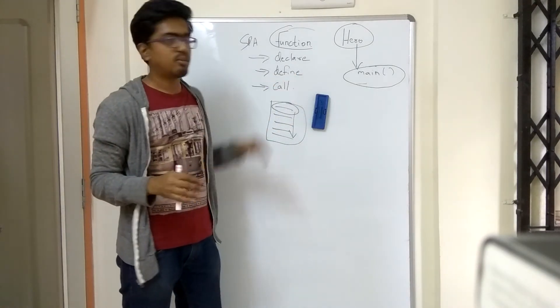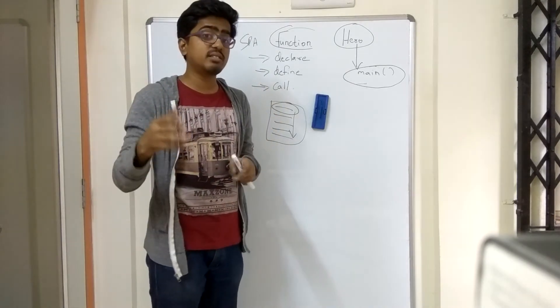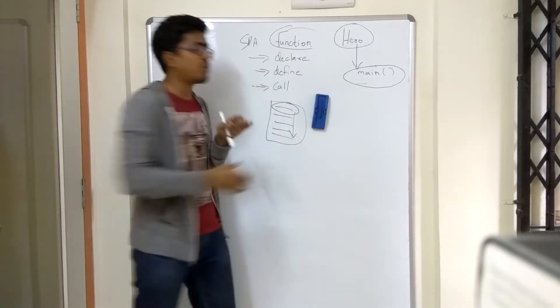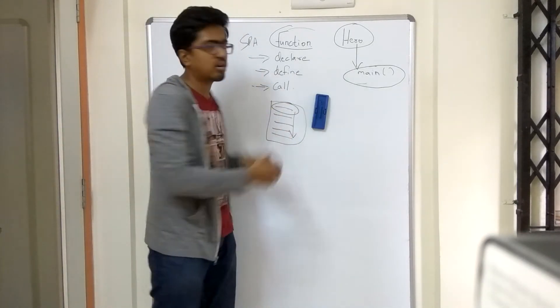The next thing I am doing is I am going to define it. I have declared it. There is a function called add. Now what does it do exactly? That is my definition. And the third thing is when I call it. That means I am putting it to use. That is what a function call is.